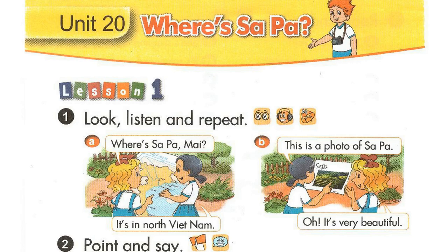Page sixty-four. Unit twenty. Where's Sa Pa? Lesson one. Activity one. Look, listen and repeat.